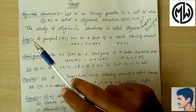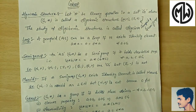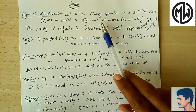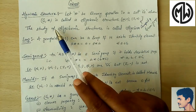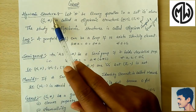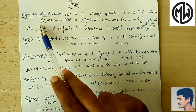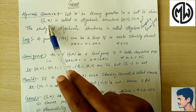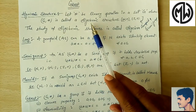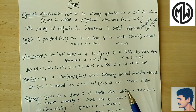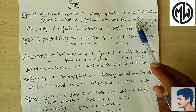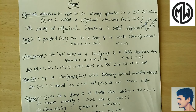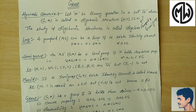First of all, algebraic structure: let star be a binary operation in a set G, then (G, star) — this type of sequence or structure is called an algebraic structure. For example, (N, +) and (Z, +) — these are algebraic structures. But the question arises: what is a binary operation?